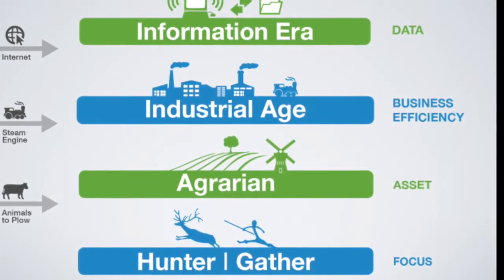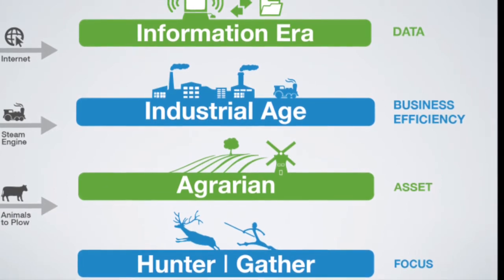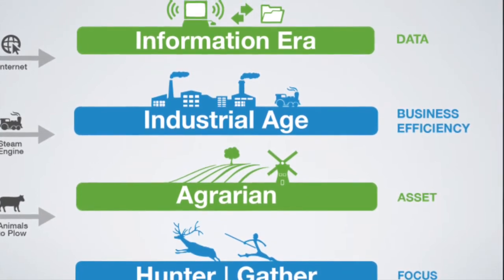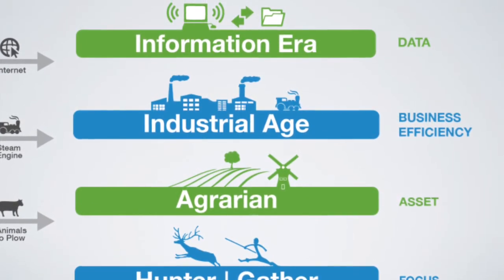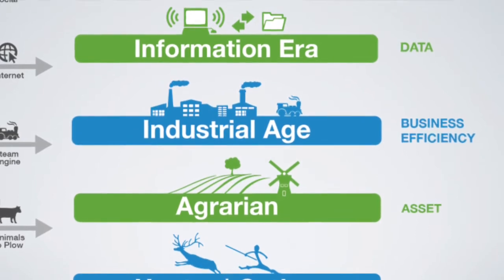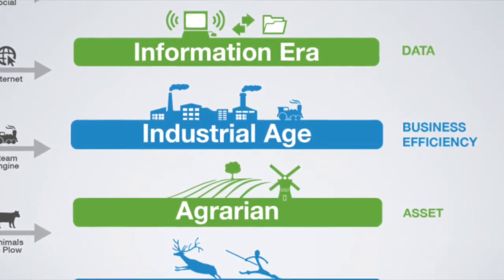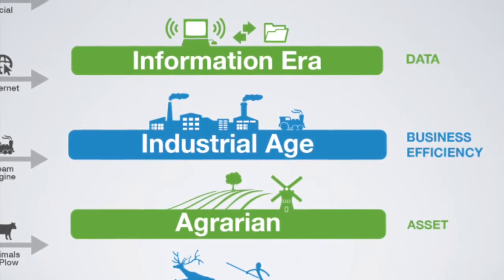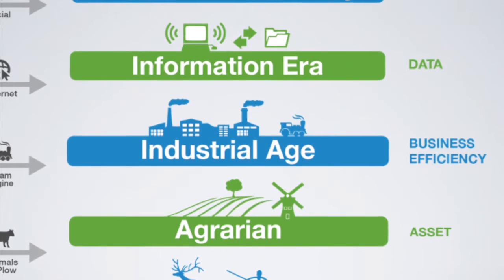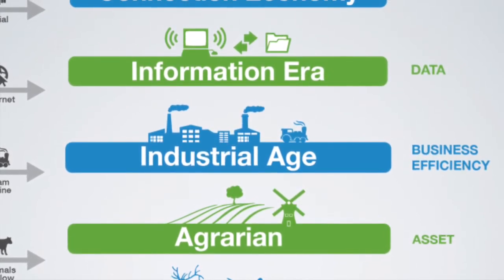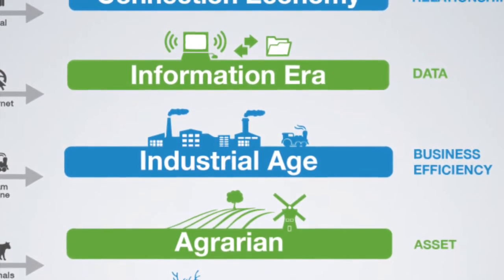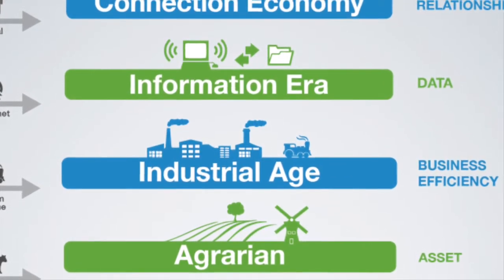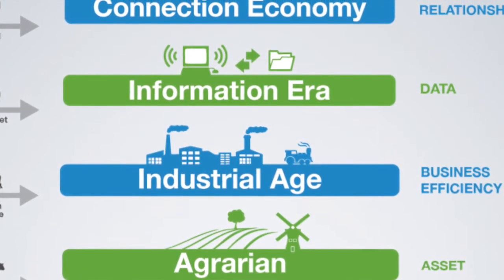Then we moved into the agrarian economy, where assets were big — animals that could plow, we could work the land and stay put. Slowly but surely we moved from the agrarian economy to the industrial age, where we had business efficiency through the steam engine, locomotives, and other power sources to produce on a wider scale. The commodities from the industrial age moved us into the information age, where data was king, the internet started coming around, and the internet of things began. But then we reached the connection economy.